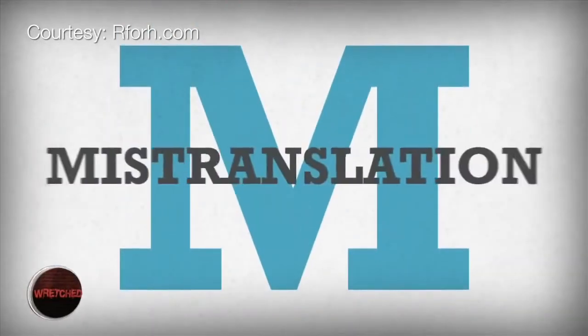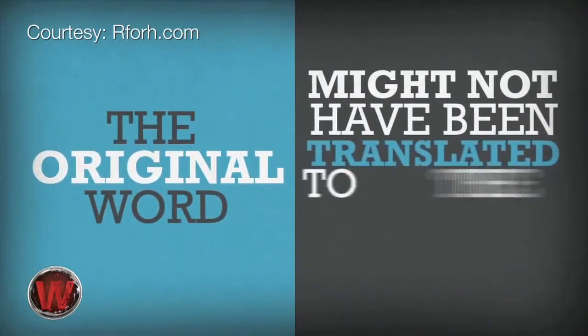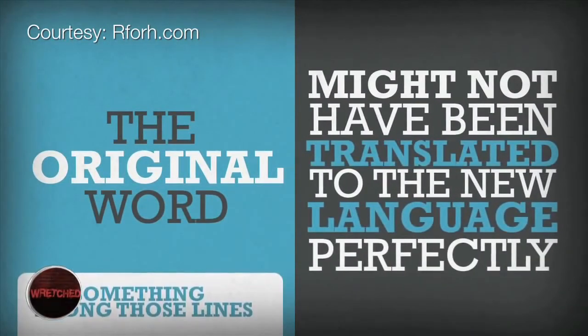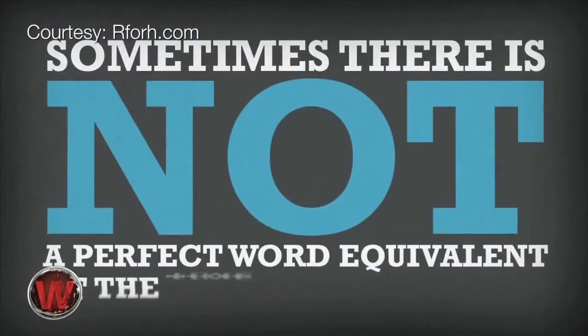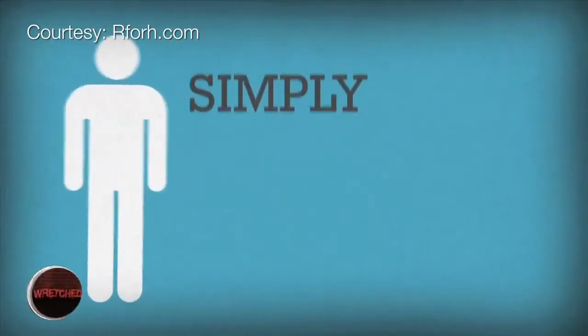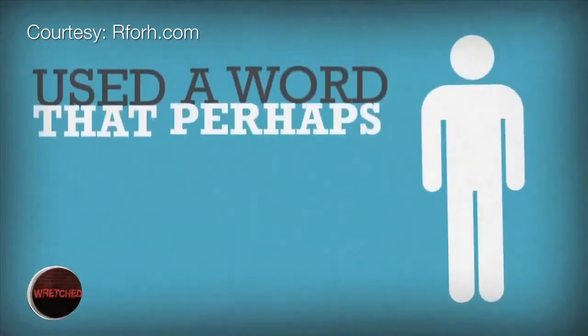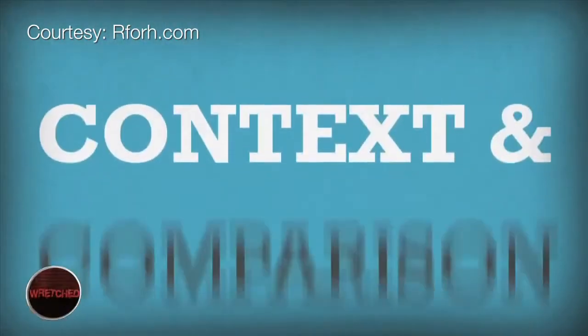On to the M. M is for mistranslation. This is when the original word might not have been translated to the new language perfectly or something along those lines. You've got to realize that sometimes there's not a perfect word equivalent at the time of translation, or that the translator simply had a slip of the pen or used a word that perhaps could be translated in different ways.